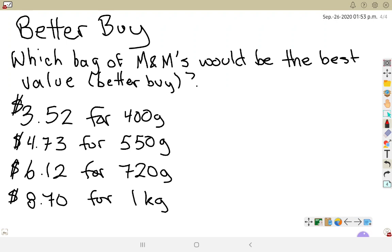If I look at this first bag, it's $3.52 for 400 grams. That's my rate: $3.52 for 400 grams. What I want to know is the unit price per 100 grams. If you need a quick refresher, go back to the previous video on unit price to see how we're going to fill this in.